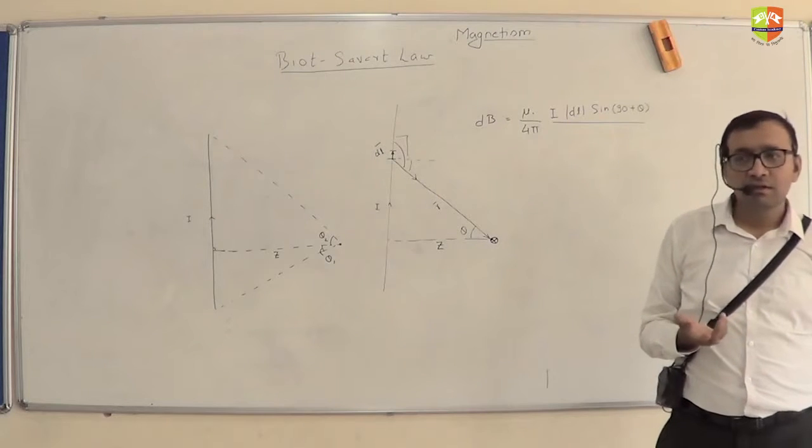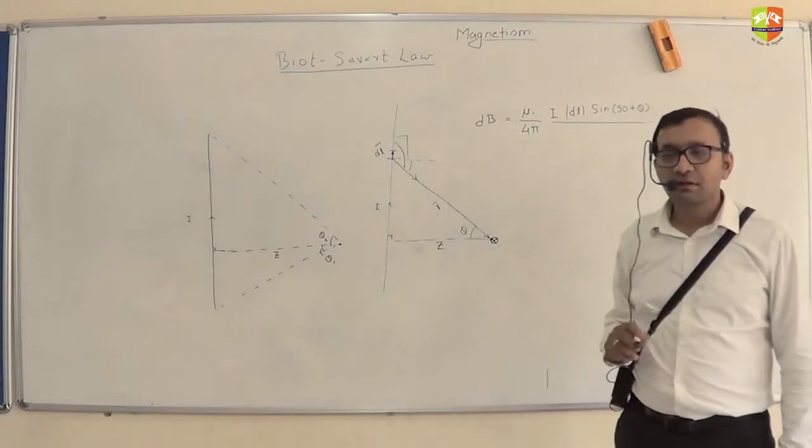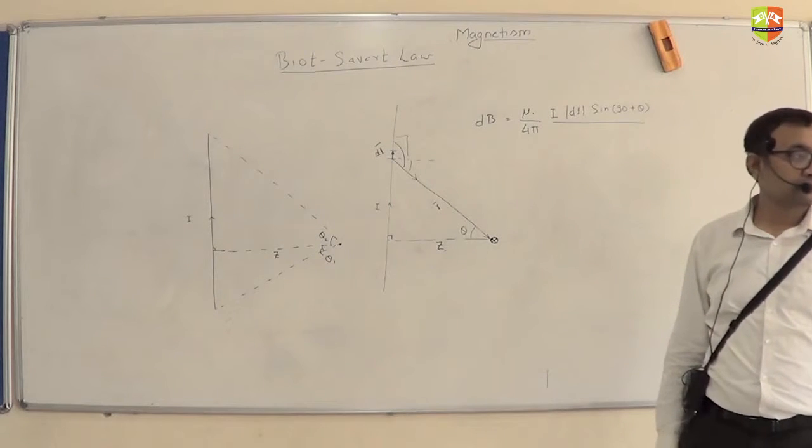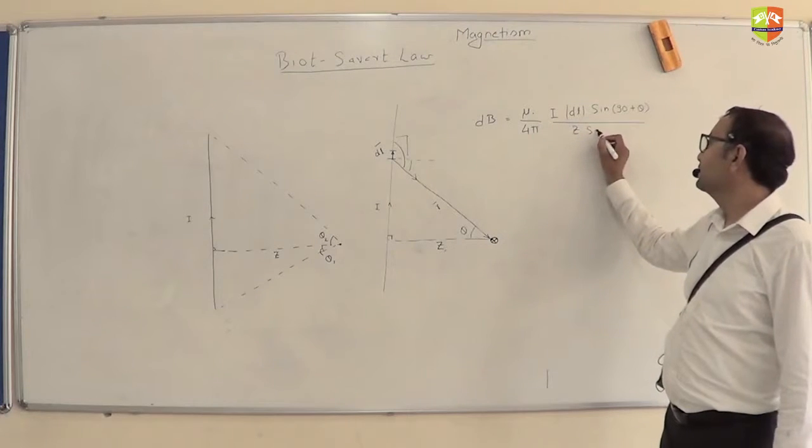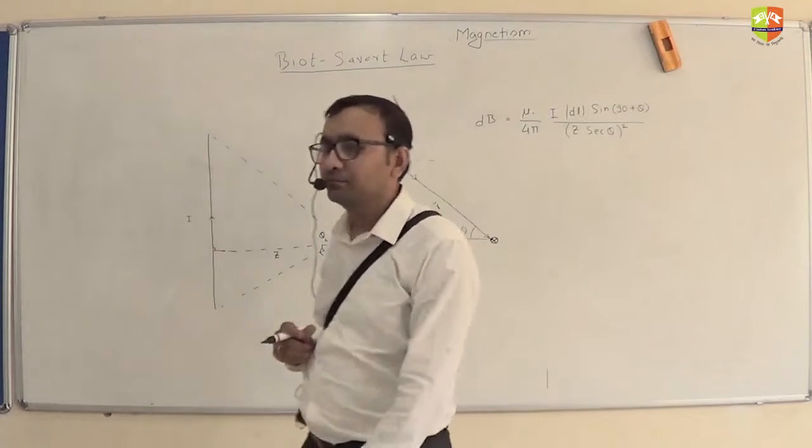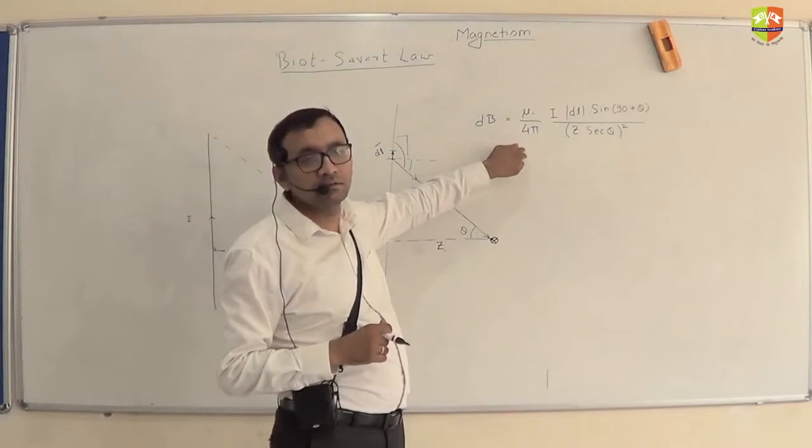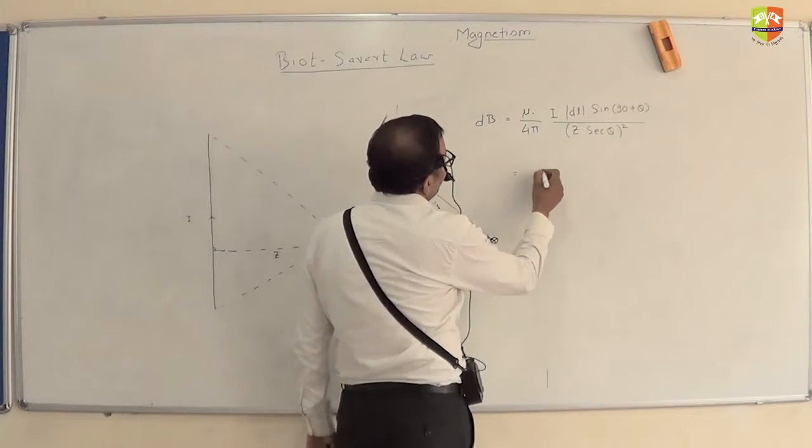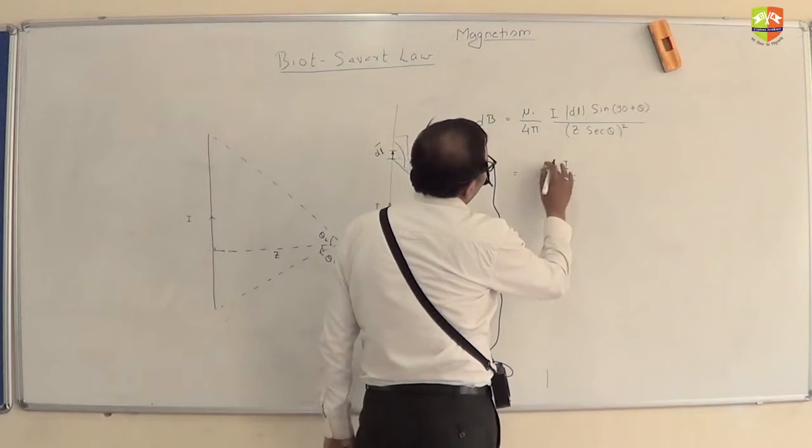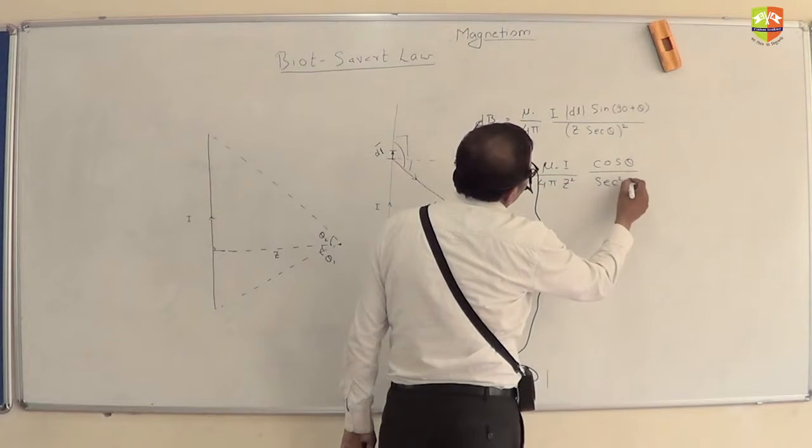What is r in terms of z? This is 90 minus theta. r cos theta is z. So r equals z sec theta.